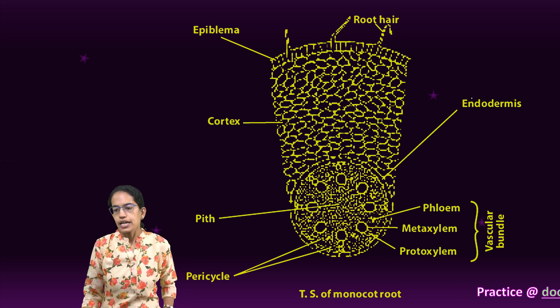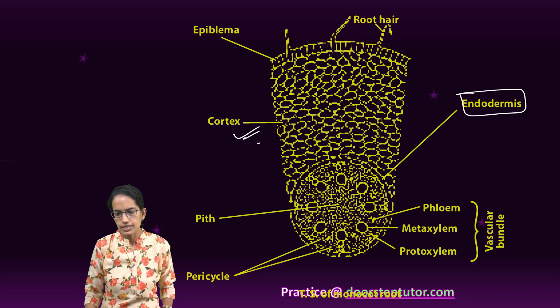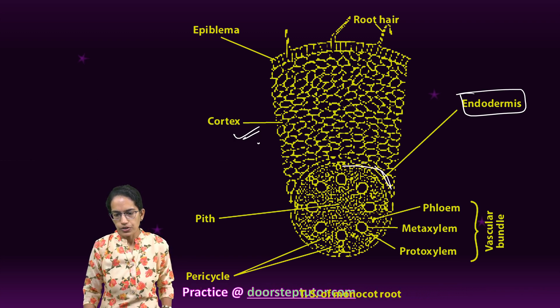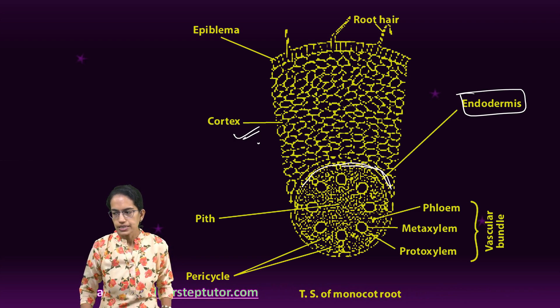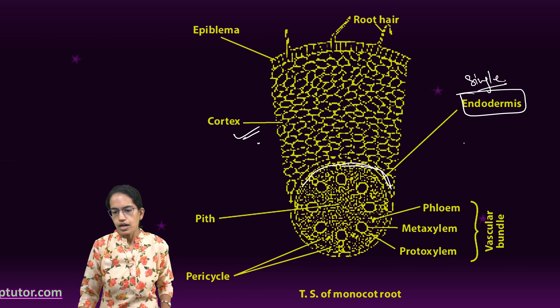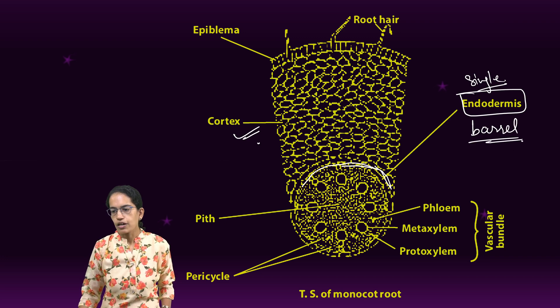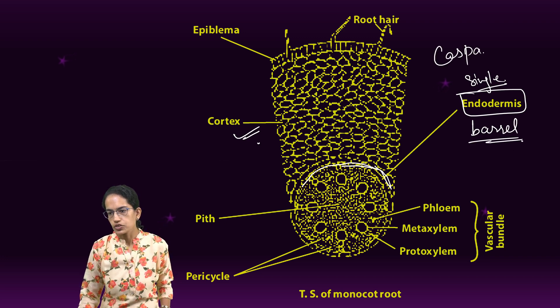The next is endodermis. Endodermis is the inner boundary of the cortex. This is usually single-layered. The shape of the cells are barrel in nature and they have a unique strip known as casparian strip.